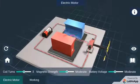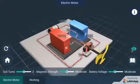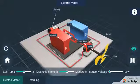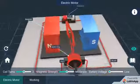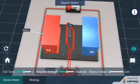An electric motor consists of a rectangular coil of insulated copper wire. The coil is placed between the two poles of a magnetic field.